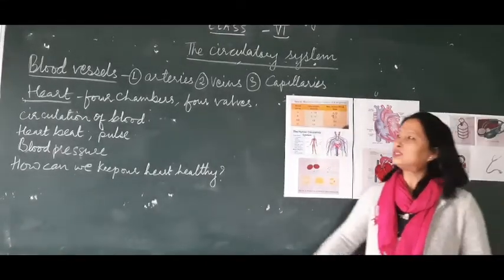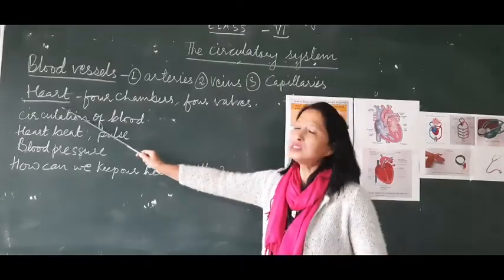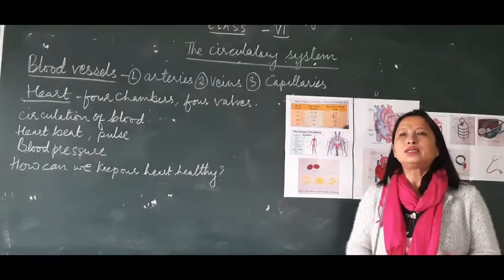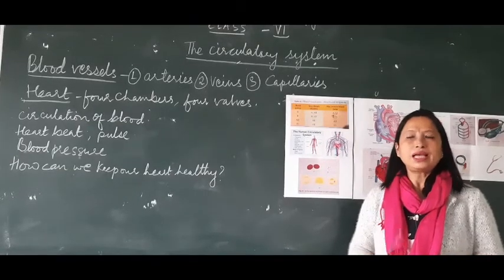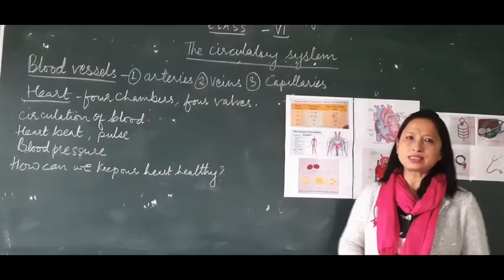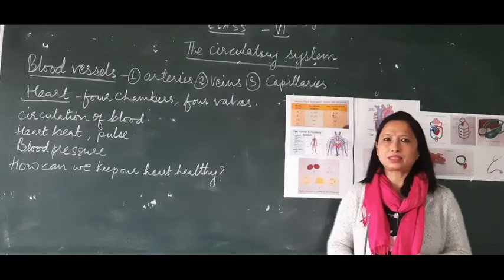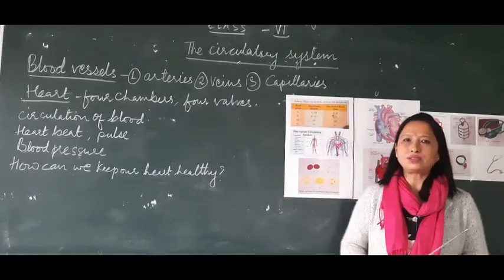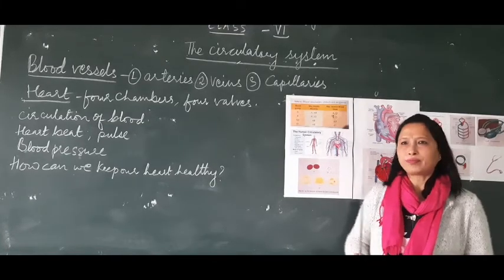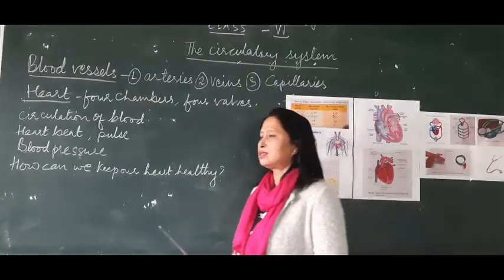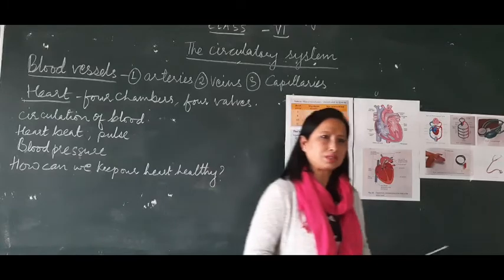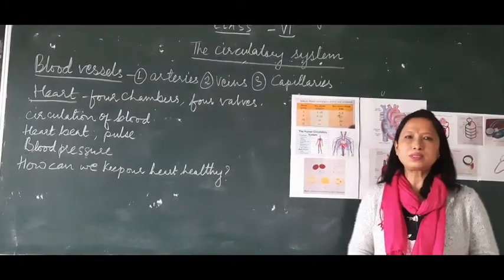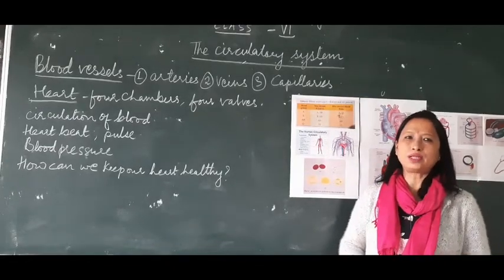The heart is the most important part of the circulatory system. It is a muscular organ located in the chest between the two lungs. The heart is the pumping organ of the circulatory system, and it is made up of special muscles called cardiac muscles.